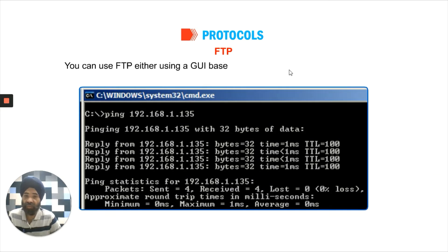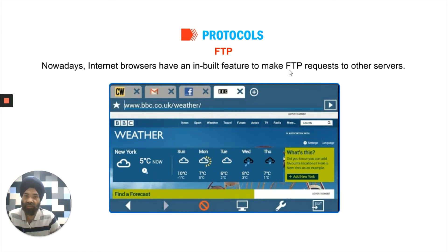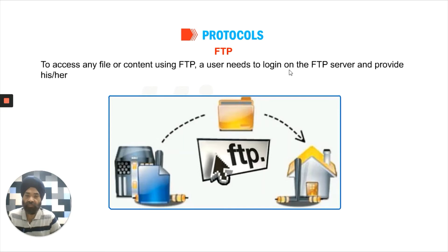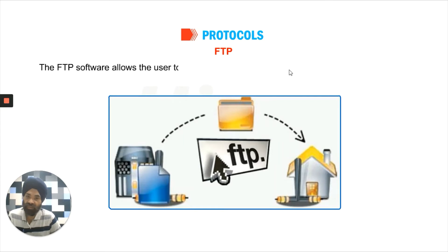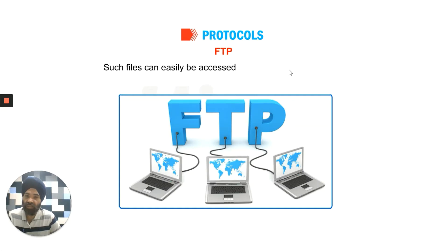You can use FTP either using a GUI-based FTP software or via MS-DOS — both will work. Nowadays, Internet browsers have a built-in feature to do these services. To access any file or content using FTP, a user needs to log in on the FTP server and provide their credentials. The FTP software allows the user to drag and drop files between the remote and the local host. Some of these files are always available free for public use, and such files can easily be accessed using anonymous FTP.